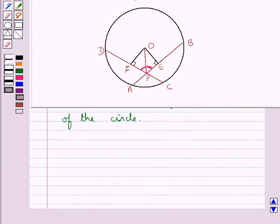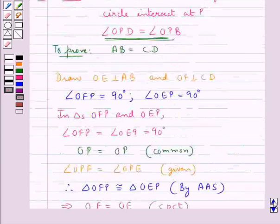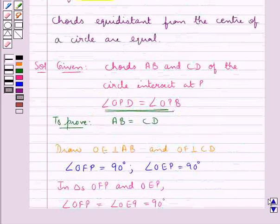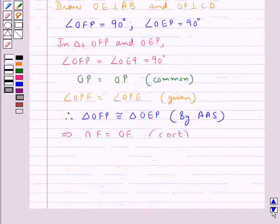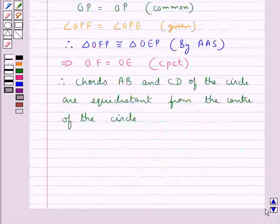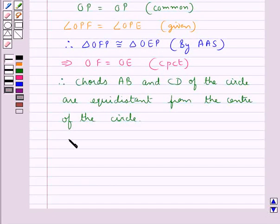Now, in the key idea, we stated that chords equidistant from the center of a circle are equal. Now that we have shown chords AB and CD are equidistant from the center, this means that both chords AB and CD are equal.